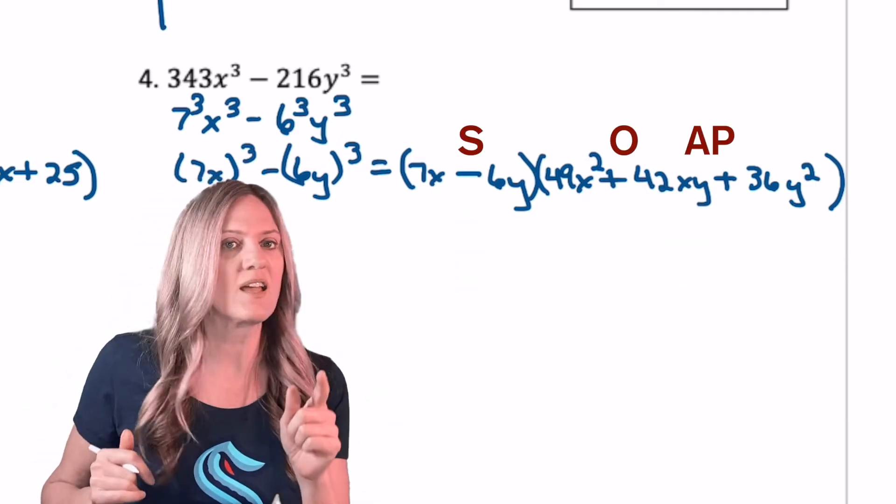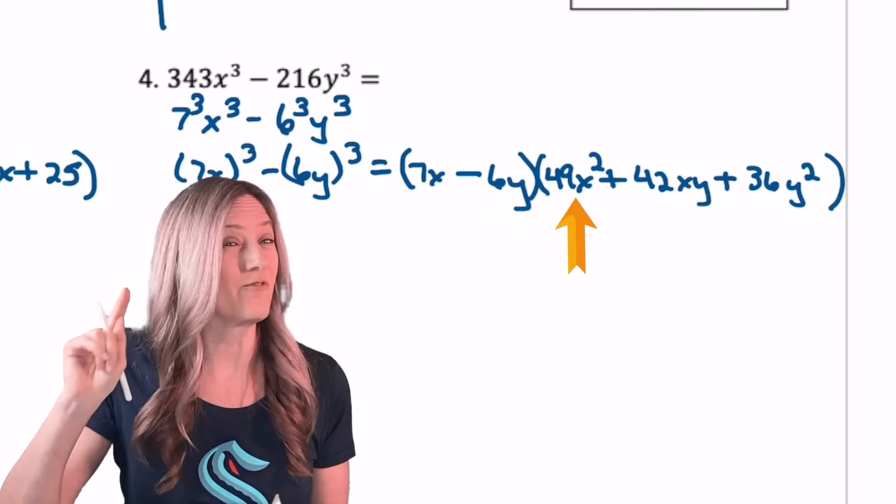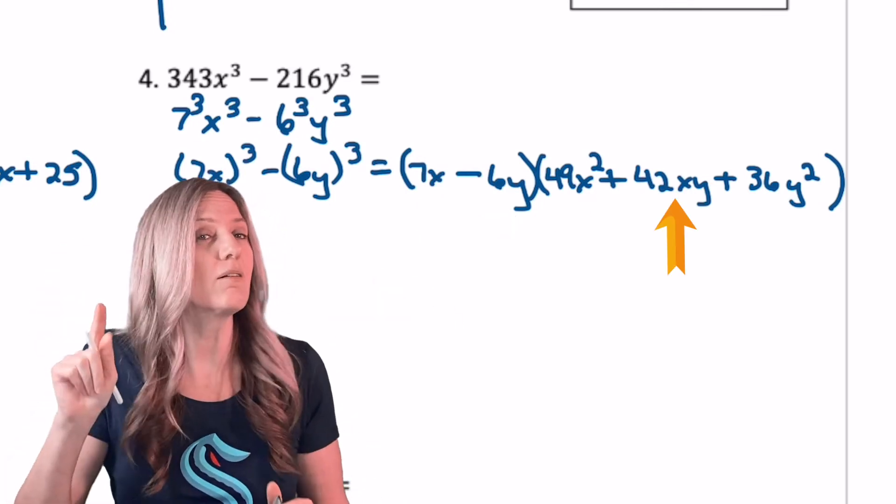Binomial, trinomial, same, opposite, always positive. First term, second term, and then first term squared, multiply together, last term squared.